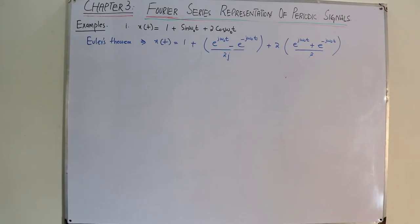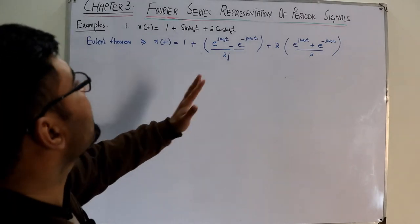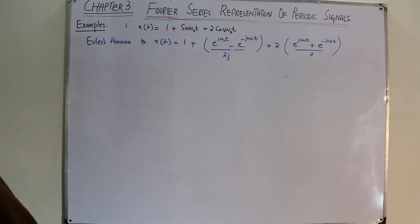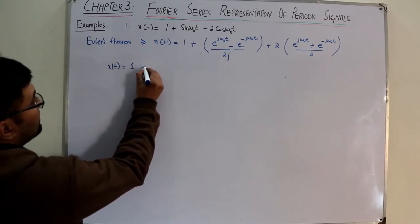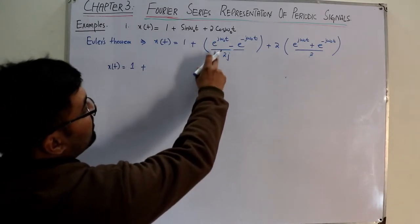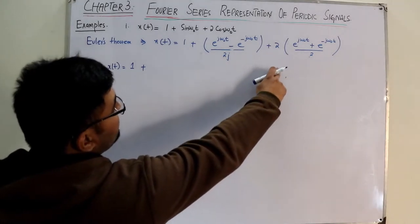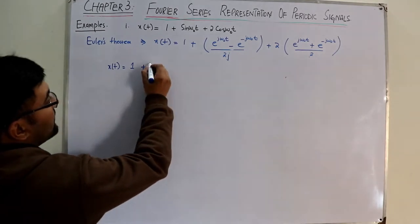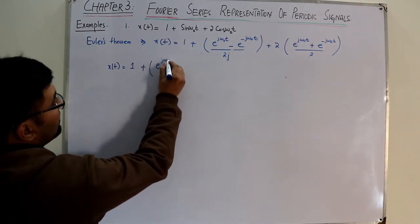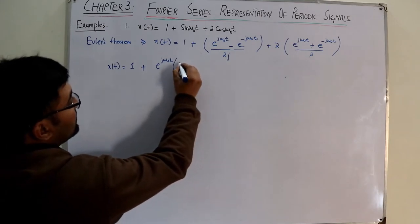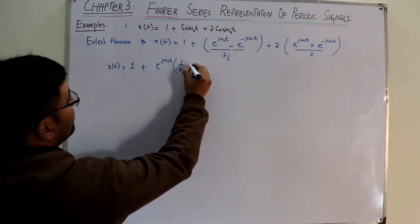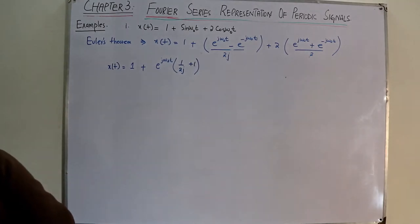Now I combine the similar frequency terms. Taking e^(jω₀t) as common, I get a coefficient of 1/(2j) + 1. For the negative frequency term e^(-jω₀t), I get 1 - 1/(2j). So x(t) = 1 + (1 + 1/2j)e^(jω₀t) + (1 - 1/2j)e^(-jω₀t).